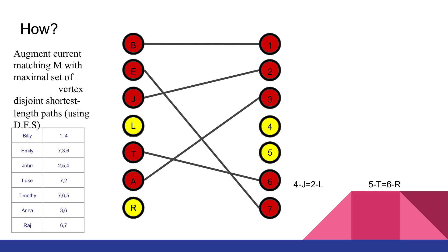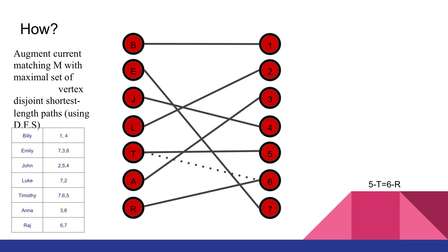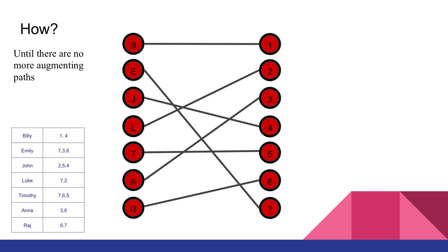Notice I've used either a hyphen or an equal sign in my paths. The hyphen sign denotes an edge that's not in the current matching; an equal sign denotes an edge that is in the current matching. Now I'm going to use these paths and augment my current matching. I've added the edges 4 to J and 2 to L and removed the edge J to 2, shown with a dotted line. Doing the same with the other path leaves me with this matching. The condition of our loop was to keep going until there are no more augmenting paths — there are no more augmenting paths in this graph, so the final step is to return the current matching M.